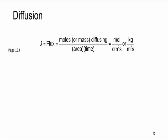How do we quantify the amount or rate of diffusion? We quantify this value using this relation. The rate of diffusion or flux equals the moles or mass diffusing per area per time. Therefore, the unit is mole per centimeter squared second, or kilogram per meter squared second.